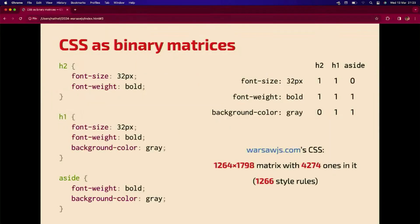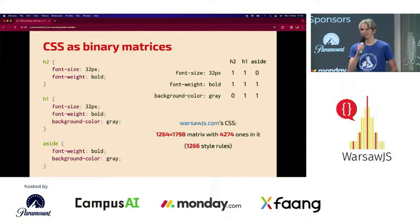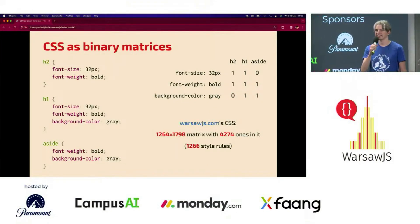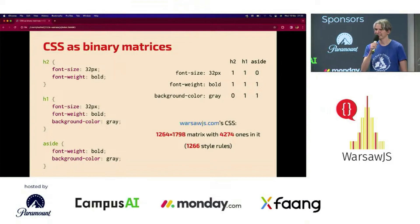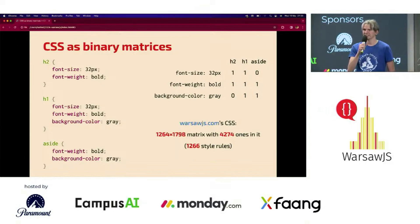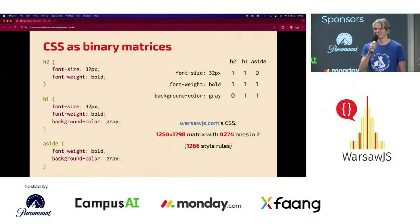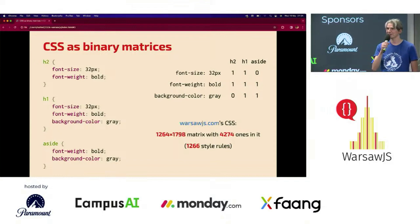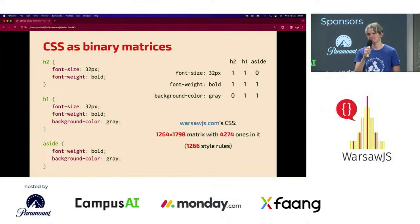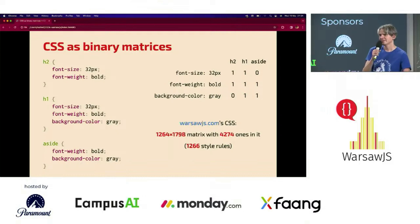The first step is to take the input CSS, take all the selectors, separating them if they are comma-separated into the base selectors, and put them on the columns of a 2D matrix. Then take the CSS declarations, deduplicating them, and put them on the rows of the matrix. So we can represent the CSS as this 3 by 3 matrix. In real life, I've tried the warsawjs.com CSS — it's more like 8000 by 8000, which is quite typical for CSS found in real life.